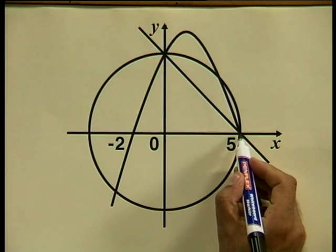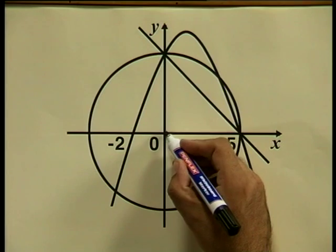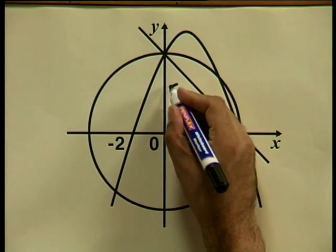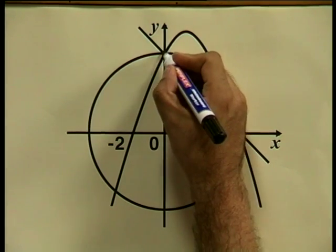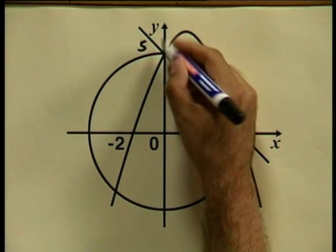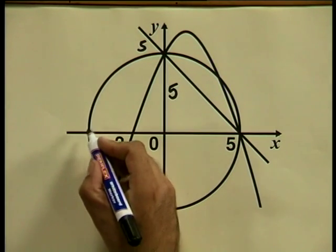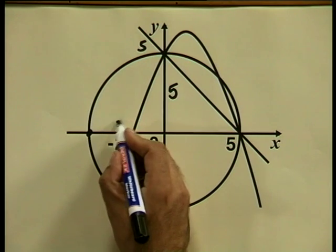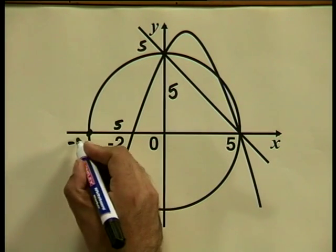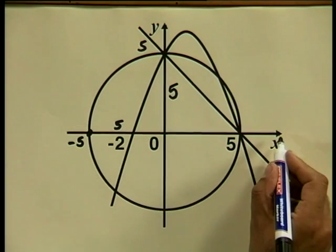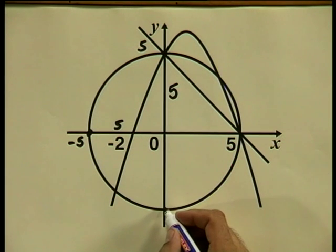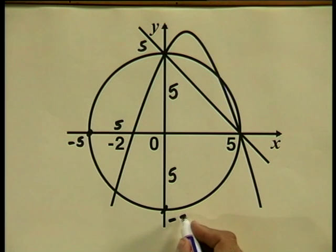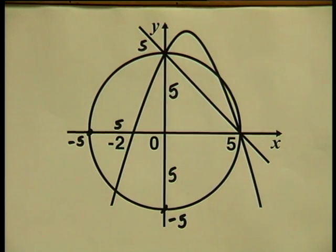If the radius of the circle is 5 units, the distance up here — which is also a radius — would be 5, making this point 0,5 on the y-axis. The distance to the left, also the length of the radius, would be 5, making this point negative 5 on the x-axis. Coming down, another radius of 5 units on the y-axis gives the point negative 5. Remember to use your knowledge of the properties of a circle.